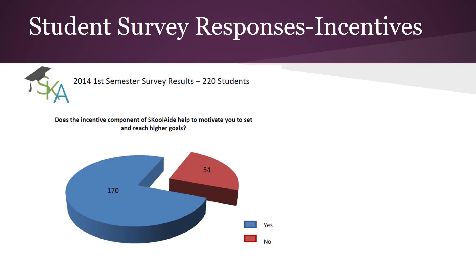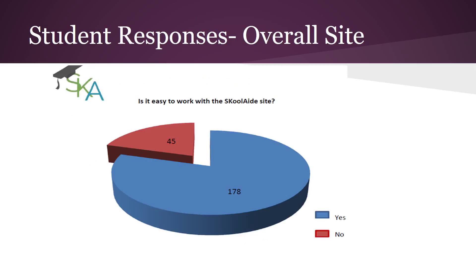After the first semester with the 220 registered students, we asked them how things were going. Of the 220, 170 said they were motivated and that using School Aid was a positive experience for reaching their goals, while 54 did not feel that way. In the future we will gather more information to work towards a higher success rate. Another component of the platform assists students in organizing short-term and long-term goals and staying on track with assignments.